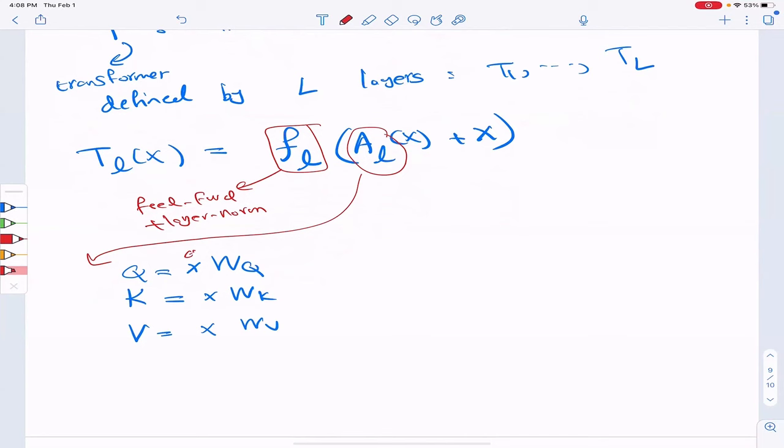So here, X is in D dimension, in RD. These matrices will map a vector from D dimension, let's say to a vector from capital D dimension.